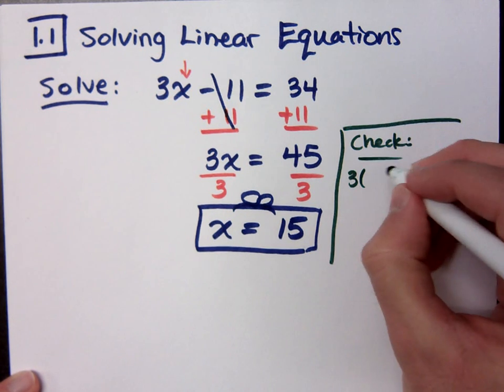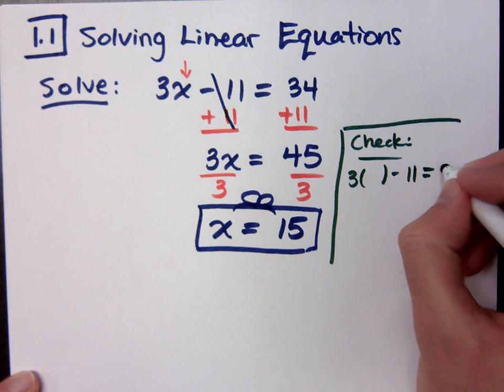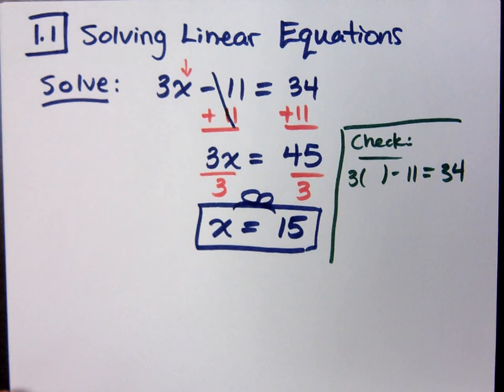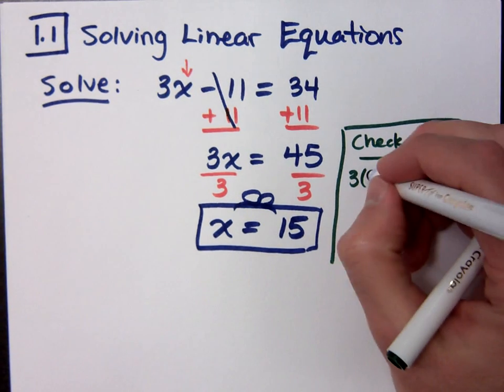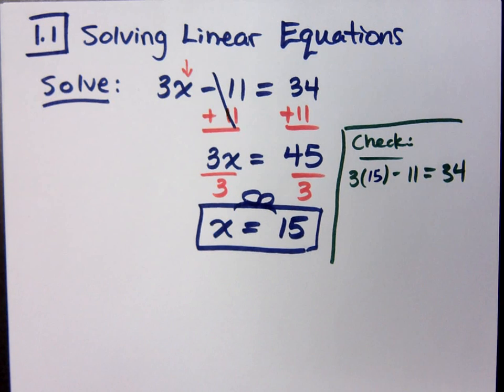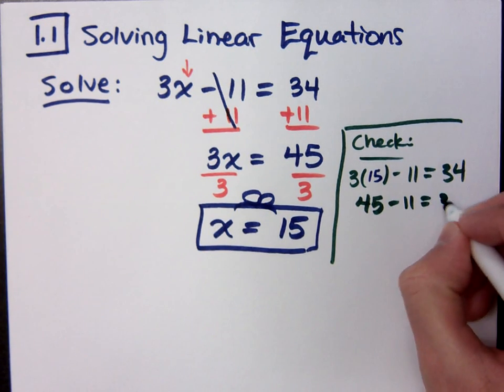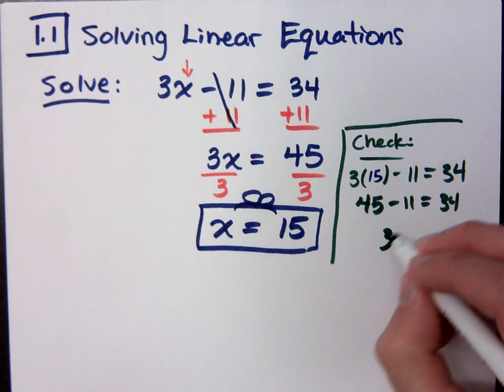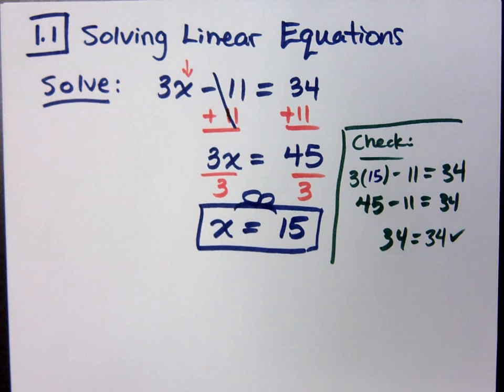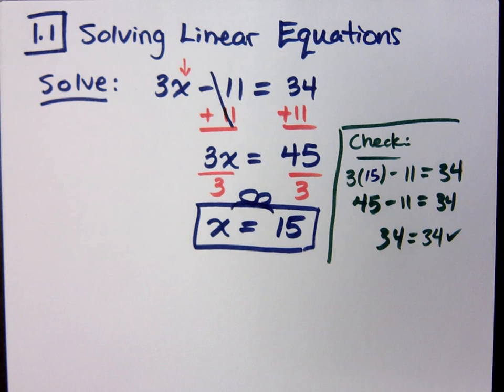So if I check this guy, always go back to the original. You put in everything that was in the original, but you use parentheses for the variable, and you put in what your solution was. We said it was 15. Does this work out? I get 45 minus 11. Does that equal 34? 34 equals 34. Everybody's happy. I know my answer is right, and I can move on.